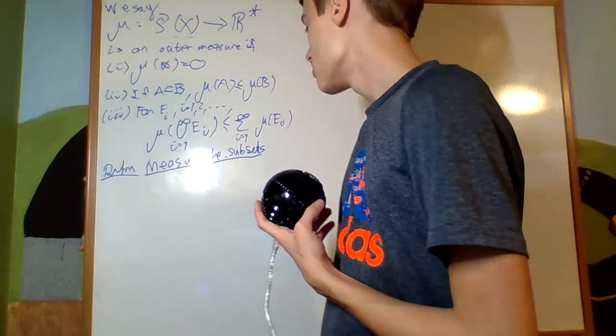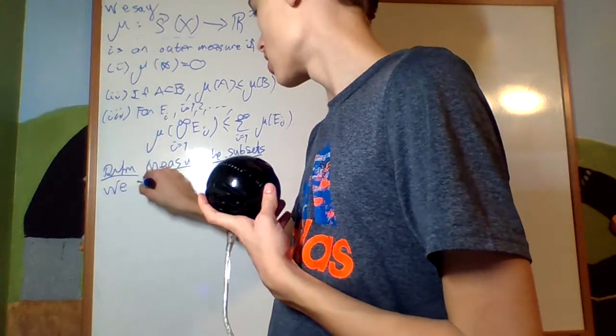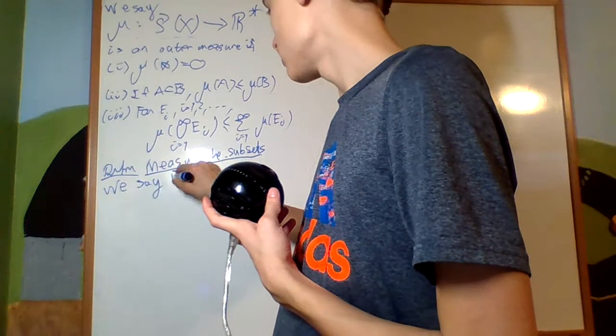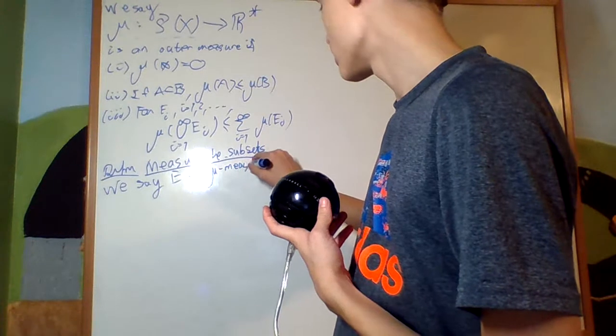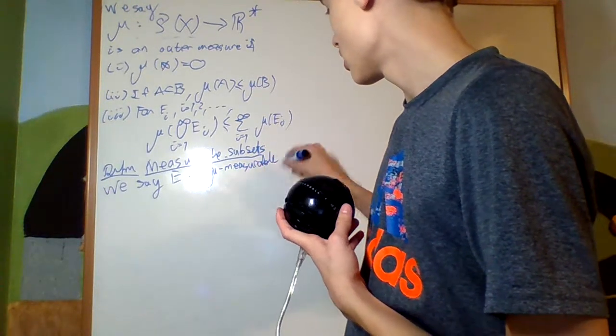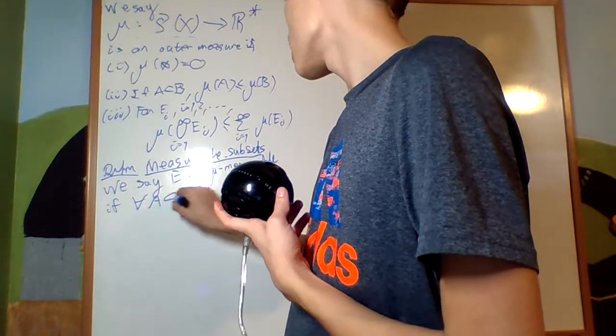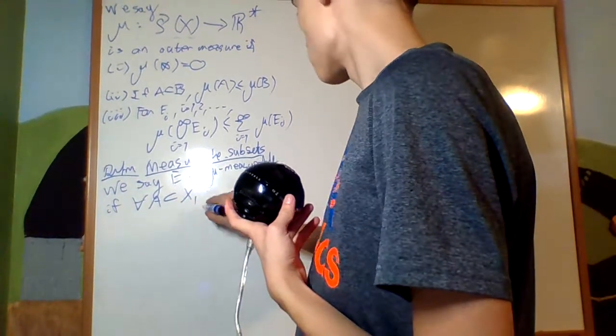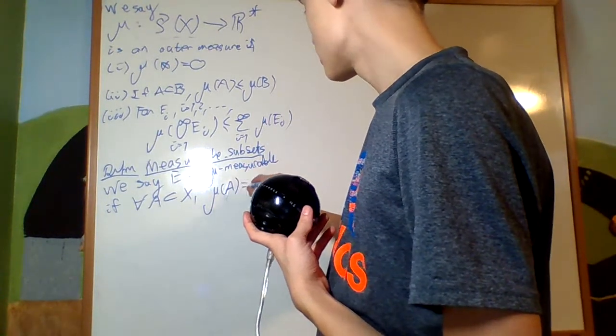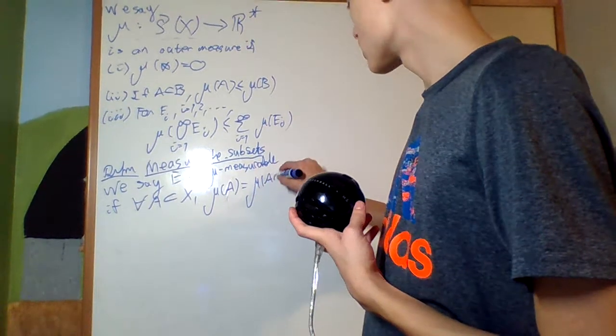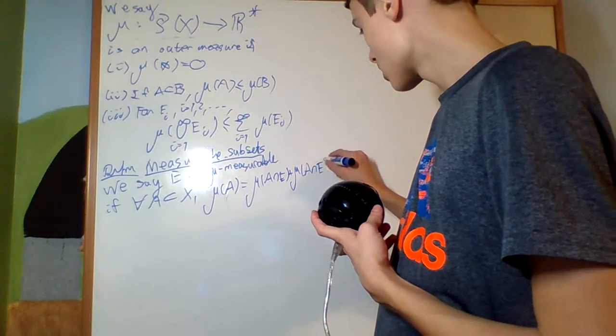Measurable subsets. We say E is measurable, is mu measurable, for an outer measure mu, if for every A, a subset of X, mu of A is equal to mu of A intersect E plus mu of A intersect E complement.